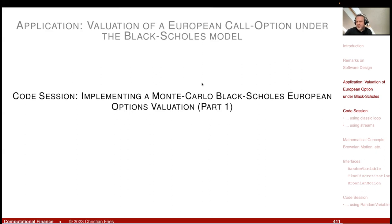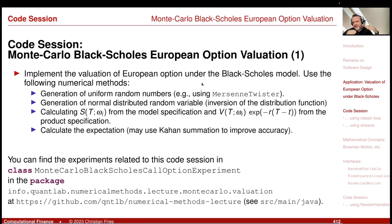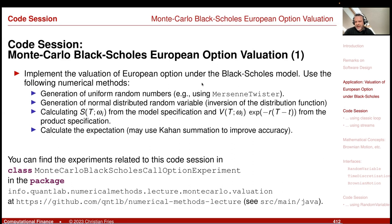Let's have a code session and implement this. First, I will implement it in a classical way — no interfaces, no classes — just a single loop. Then I'll move to a design that introduces interfaces and classes. The exercise: implement the valuation of a European option under the Black-Scholes model. We'll use our Mersenne Twister to generate uniform random numbers, then apply the inversion of the distribution function.